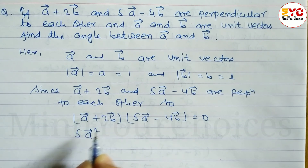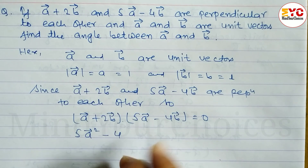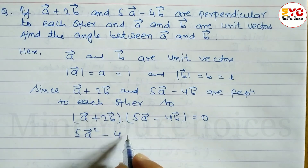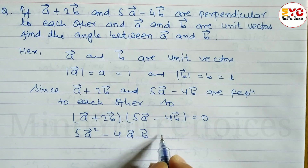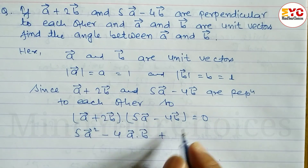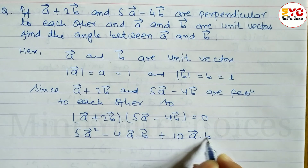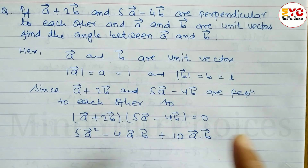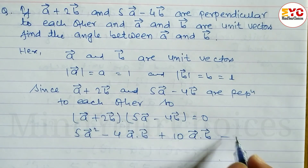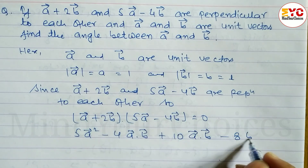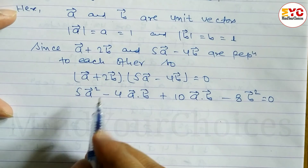Now multiply: a dot 5a gives 5a squared, then a dot (-4b) gives -4(a·b). Next, 2b dot 5a gives 10(b·a), and since a·b equals b·a, we also get 2b dot (-4b) giving -8b squared, all equal to zero.